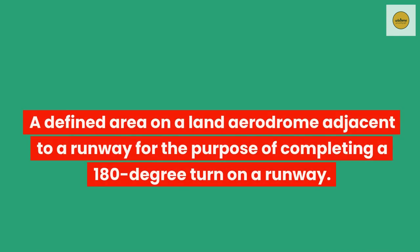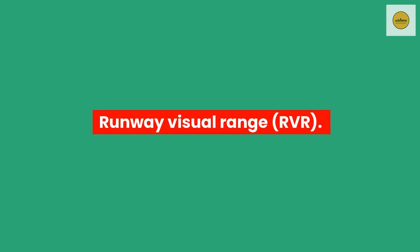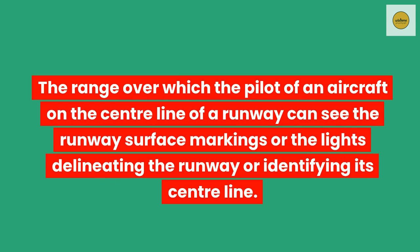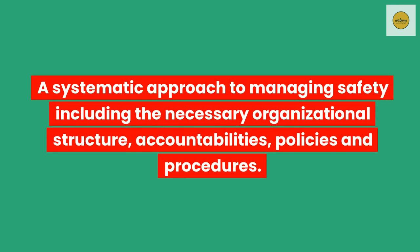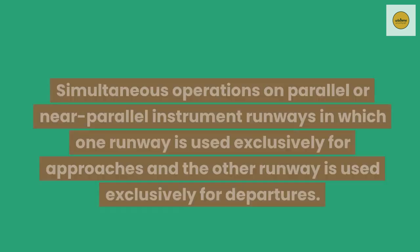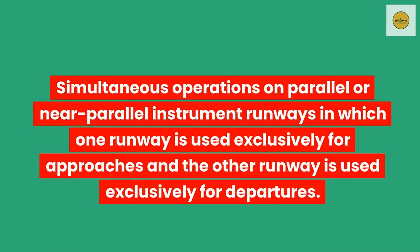Runway turn pad. A defined area on a land aerodrome adjacent to a runway for the purpose of completing a 180-degree turn on a runway. Runway visual range (RVR). The range over which the pilot of an aircraft on the center line of a runway can see the runway surface markings or the lights delineating the runway or identifying its center line. Safety management system. A systematic approach to managing safety including the necessary organizational structure, accountabilities, policies and procedures. Segregated parallel operations. Simultaneous operations on parallel or near-parallel instrument runways in which one runway is used exclusively for approaches and the other runway is used exclusively for departures.